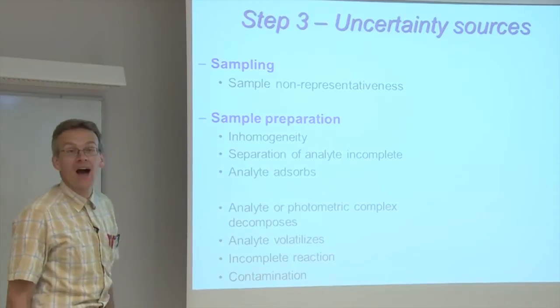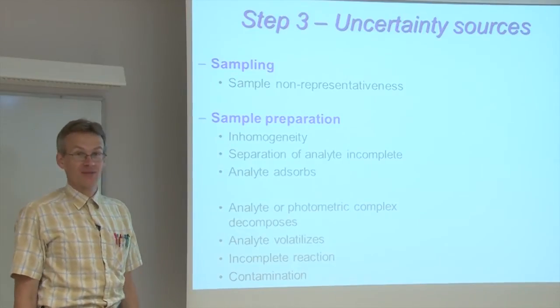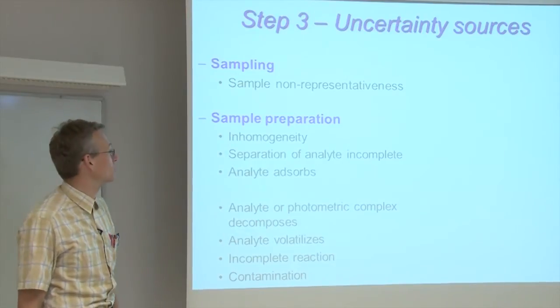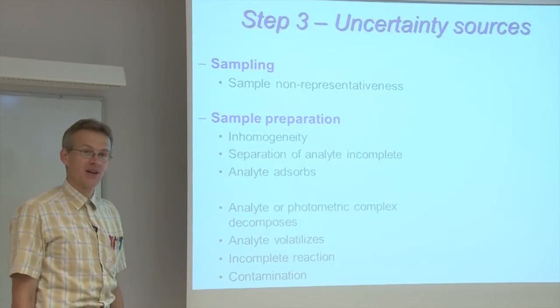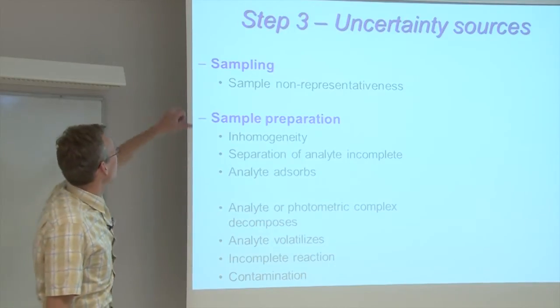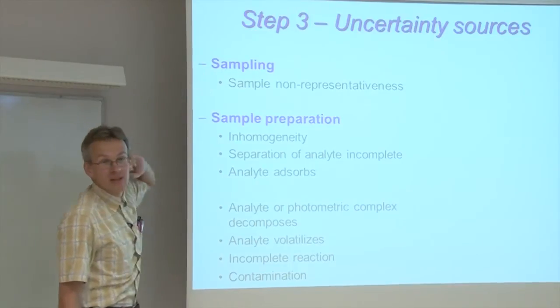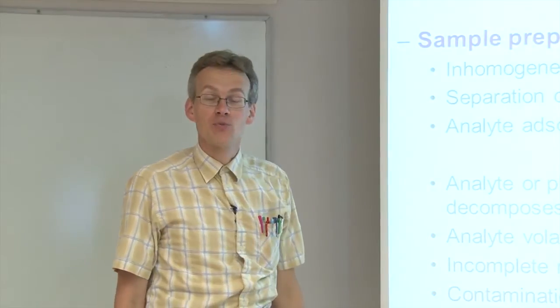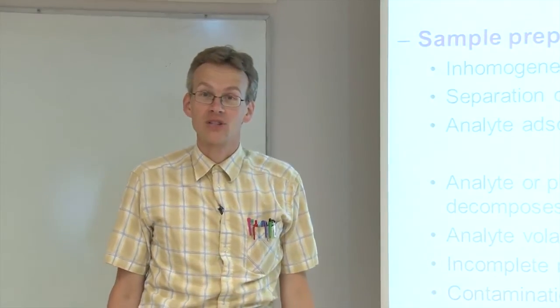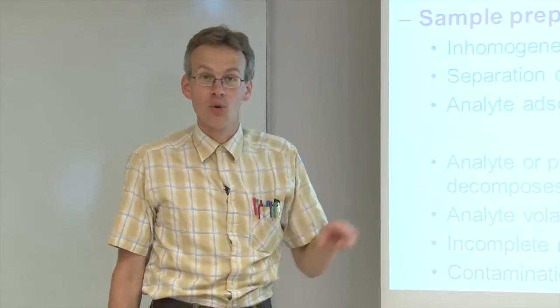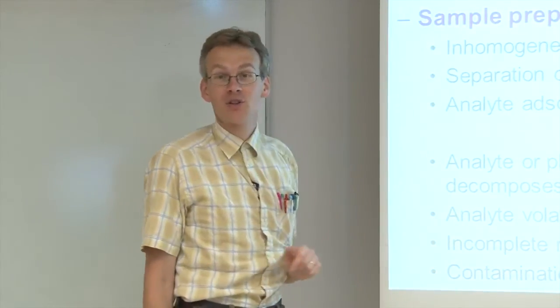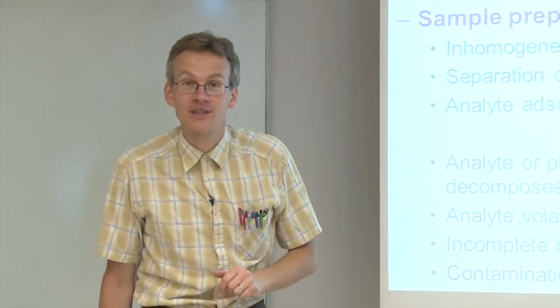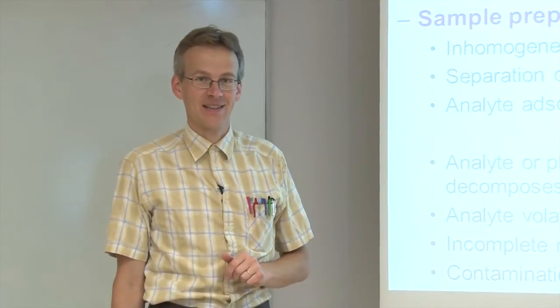Let us now look at the uncertainty sources one by one. I have grouped them on this and the following slide according to the categories of the chemical analysis procedure. Chemical analysis starts with sampling, and since our measurement is only related to the sample, not to the overall object, sampling uncertainty for us is not an uncertainty source, and we do not need to take it into account.